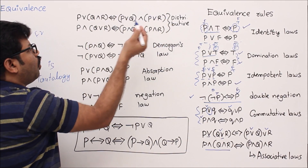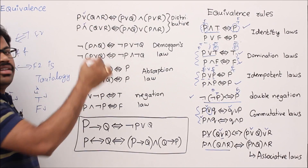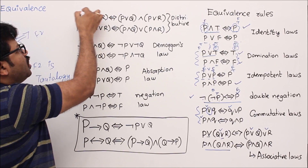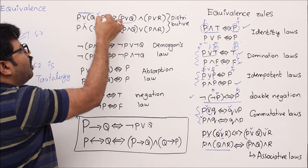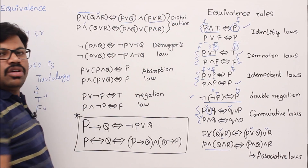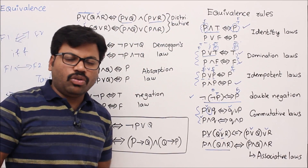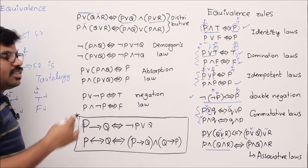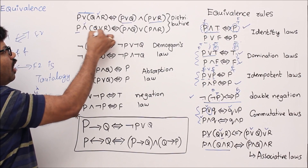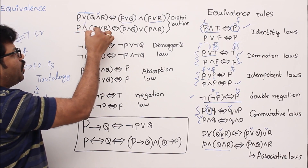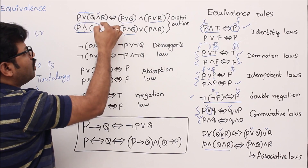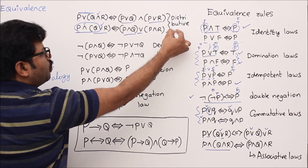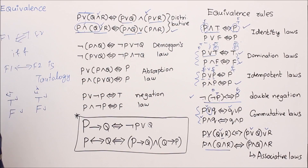Now the distributive rule. Distributive law holds for OR and AND. p∨(q∧r) ≡ (p∨q)∧(p∨r). I will teach you how and when to use the distributive rule later — for now just learn and remember the rules. Also, p∧(q∨r) ≡ (p∧q)∨(p∧r). These are distributive rules; note them and remember that they exist.